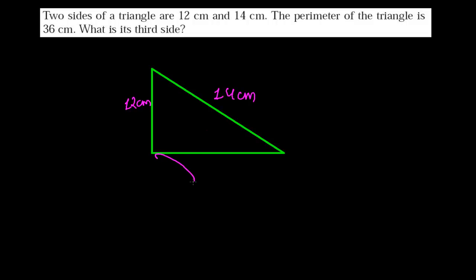Now, what is the length of this side? What is the third side's length that we need to find out? But we know one thing: the perimeter of this triangle is 36 cm.